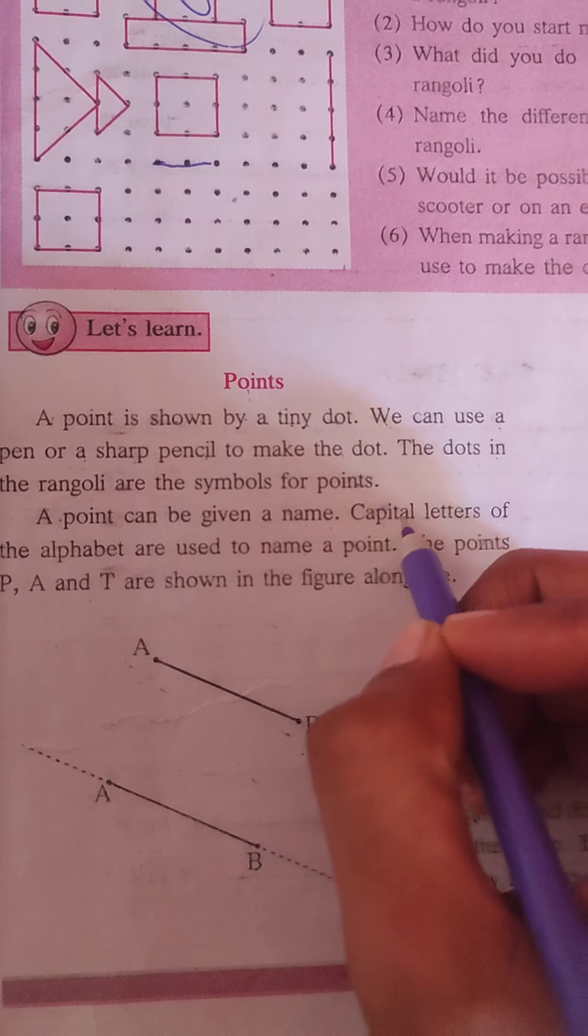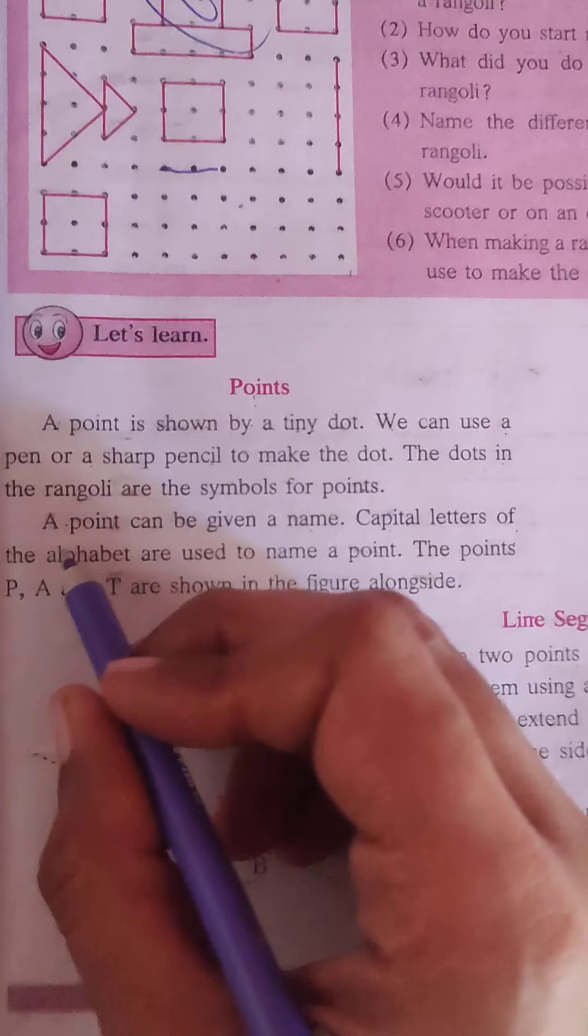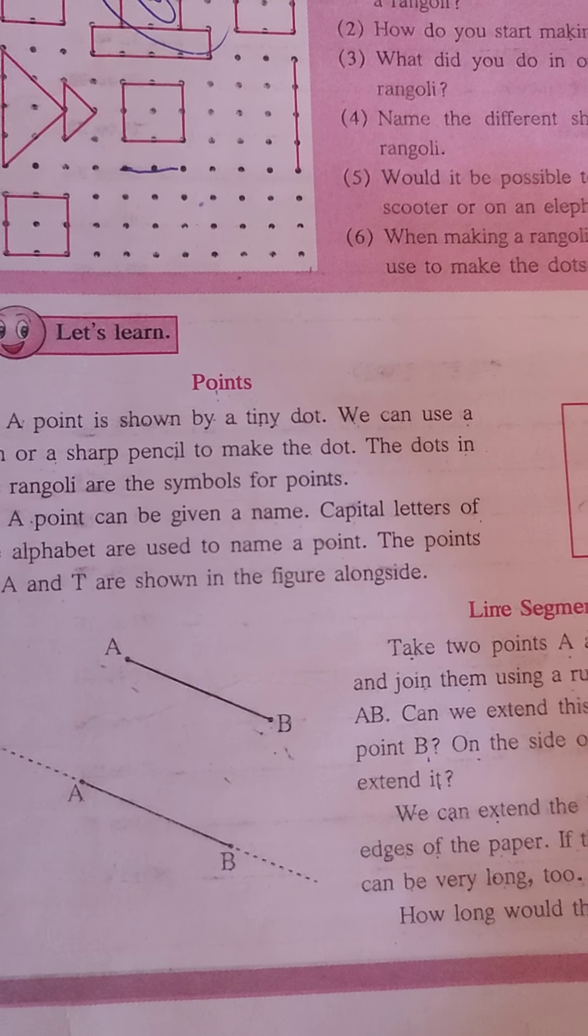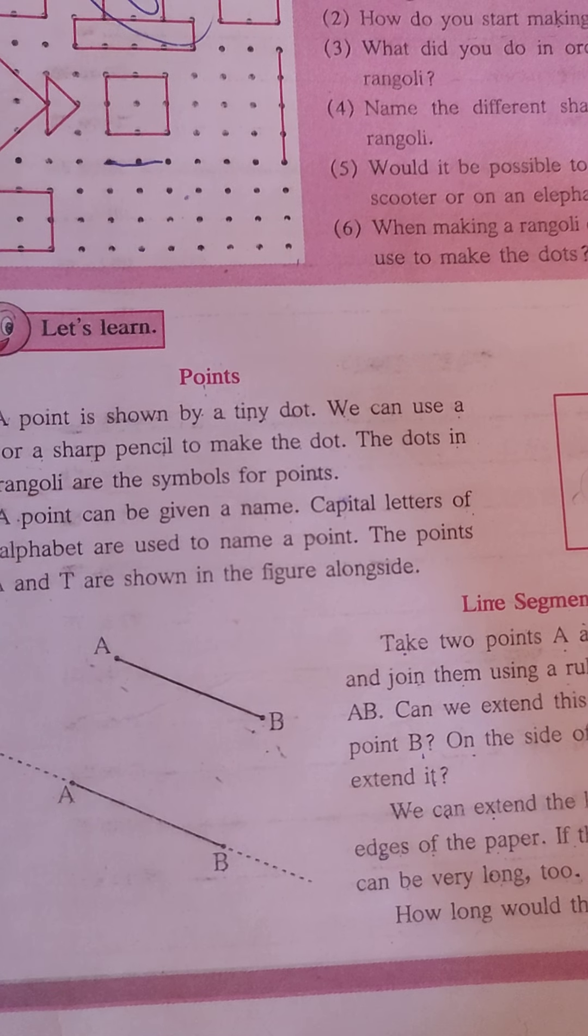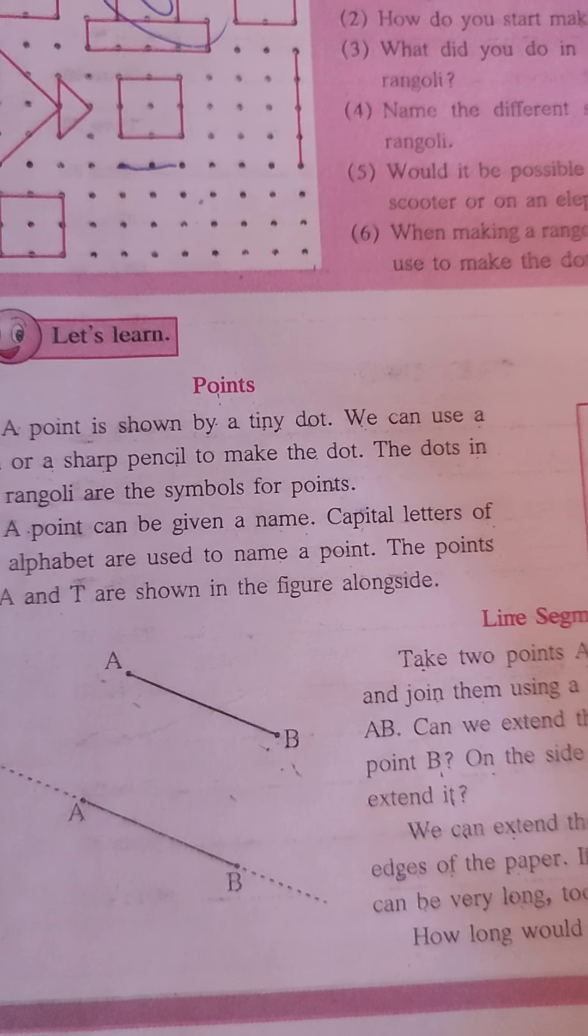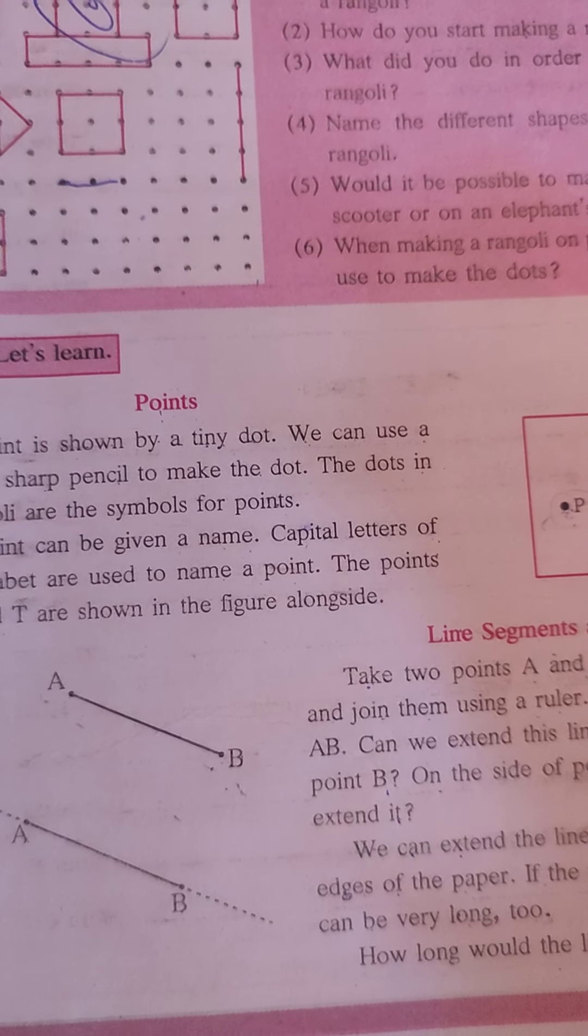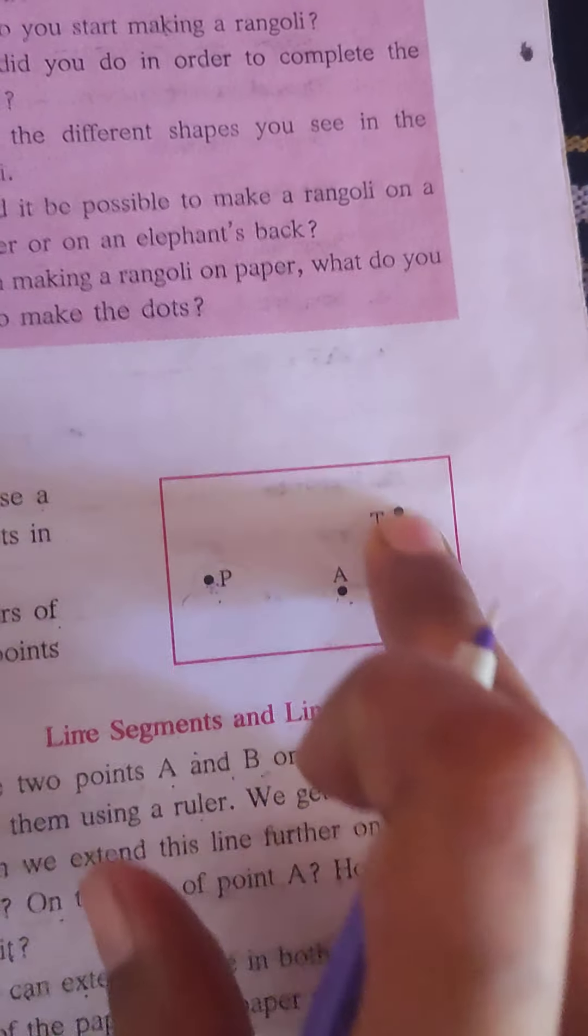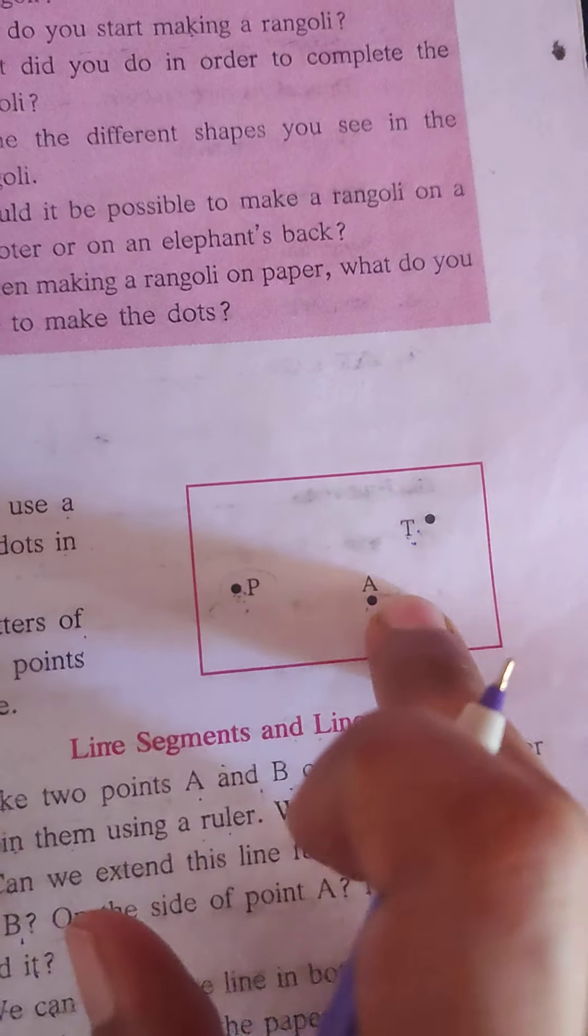A point can be given a name. Capital letters of the alphabet are used to name points. The points P, A, and T are shown in the figure alongside. Here you can see the alphabet name is given to the point.